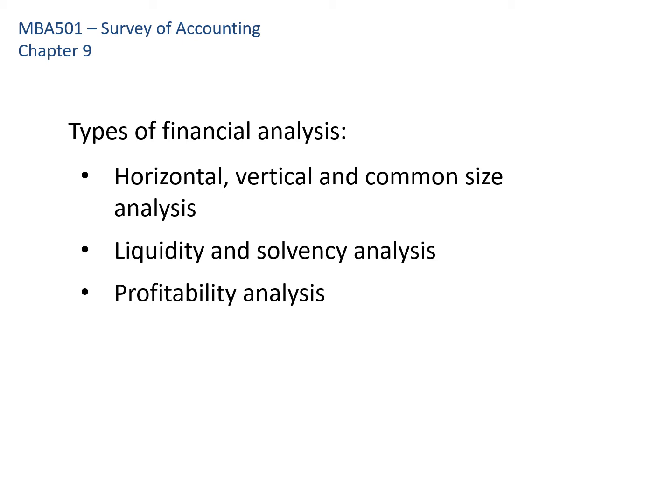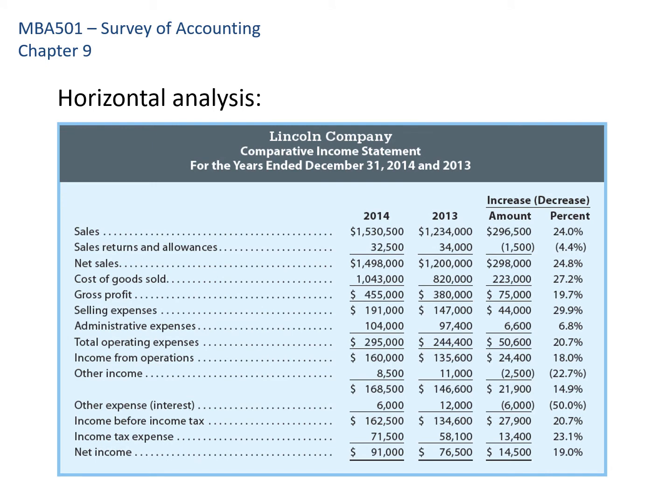We'll talk about horizontal, vertical, and common size analysis — I want to show you something not in your textbook that I think you'll find useful. Then we'll talk about liquidity and solvency, which are primarily of interest to creditors worried about loans being repaid, and then profitability. Horizontal analysis is what it sounds like: making comparisons horizontally across multiple periods. In this case, I have Lincoln Company's income statement for 2013 and 2014.